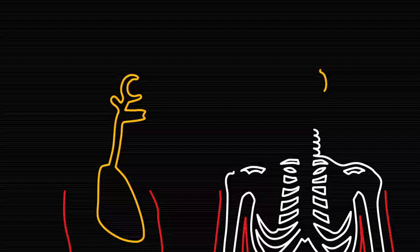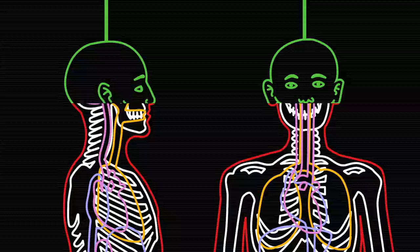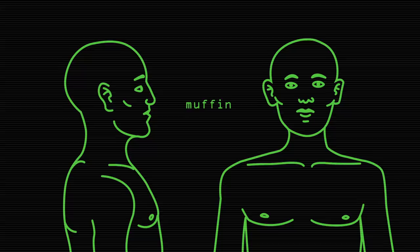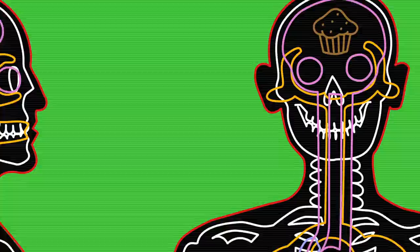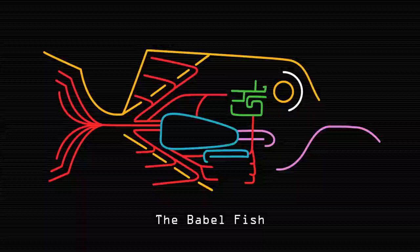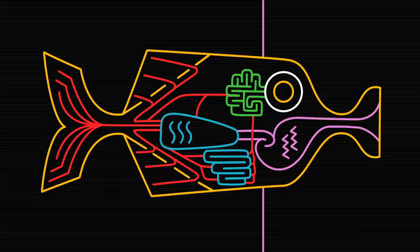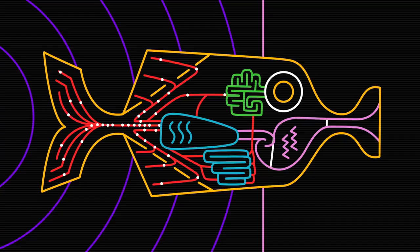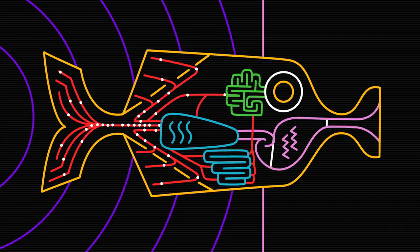The difficulty that computers have with the exceptions, irregularities, and shades of meaning that seem to come instinctively to humans has led some researchers to believe that our understanding of language is a unique product of our biological brain structure. In fact, one of the most famous fictional universal translators, the Babelfish from The Hitchhiker's Guide to the Galaxy, is not a machine at all but a small creature that translates the brainwaves and nerve signals of sentient species through a form of telepathy.